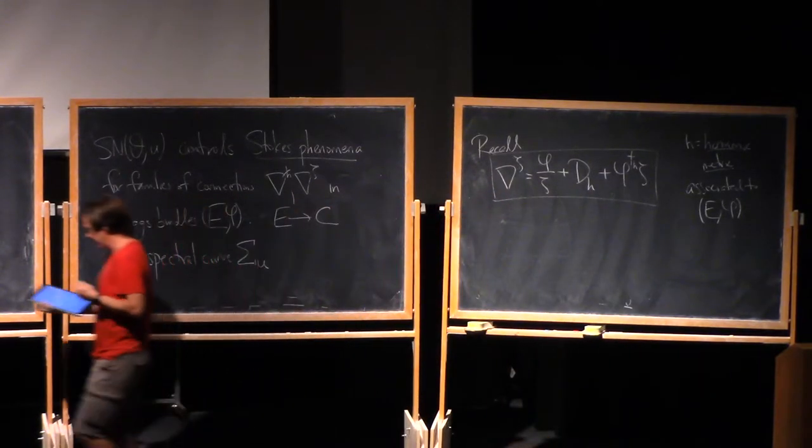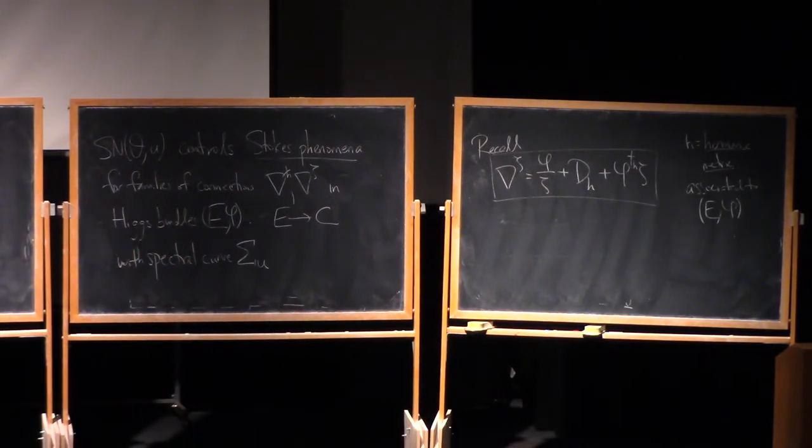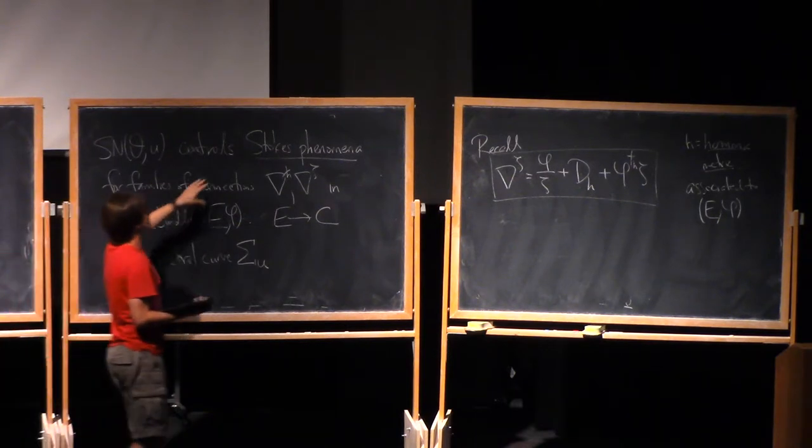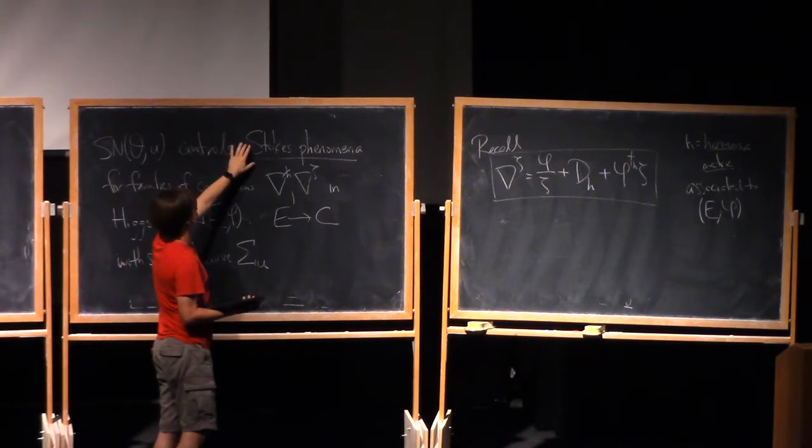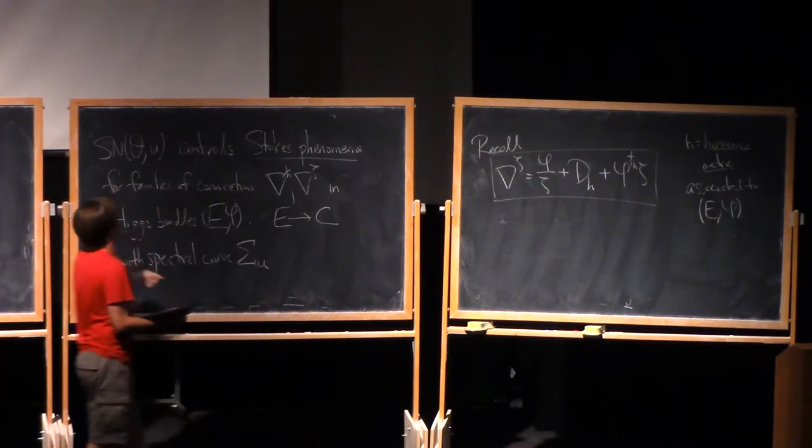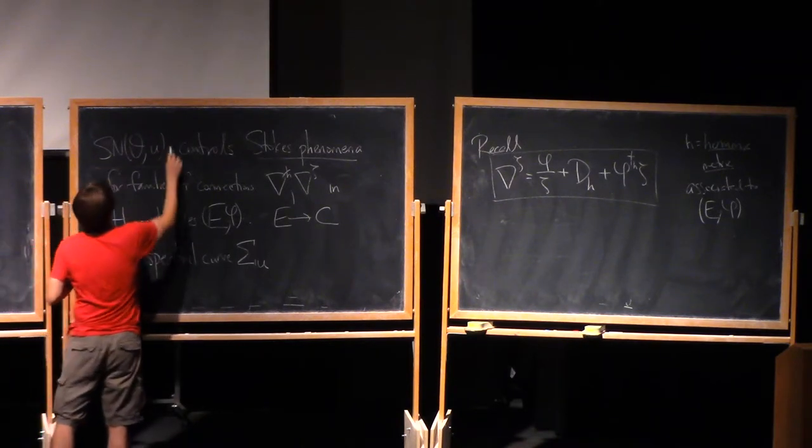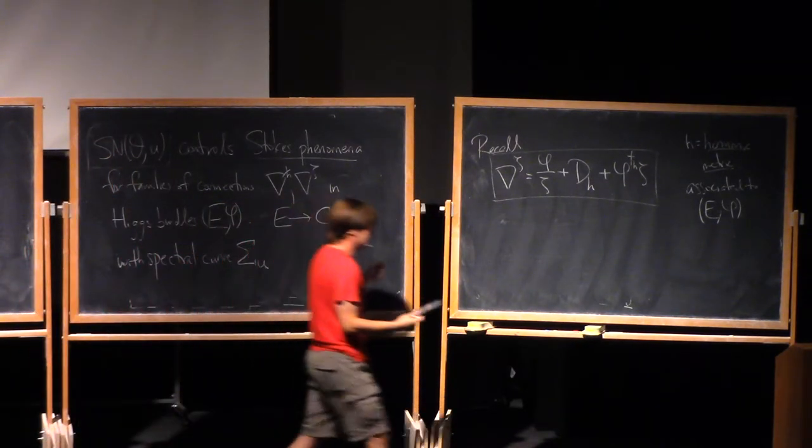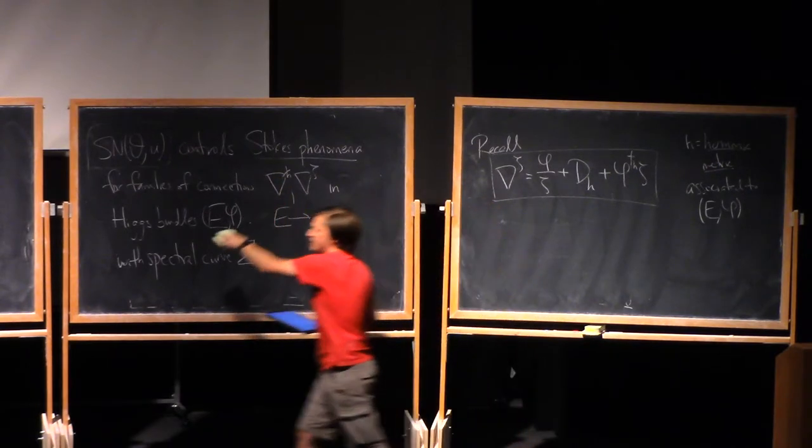And now, I wanna study this one-parameter family of flat connections. The way I'm gonna do it, as before, is to study its Stokes phenomena at small zeta. And for that, the key tool is exactly this spectral network. So let me say let me say exactly what I mean.